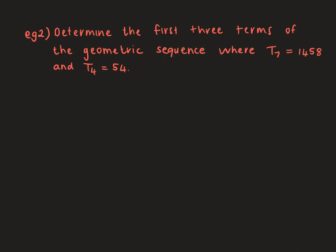Important information: this is geometric, not arithmetic like the previous example. We can begin with the same setup: I don't know what term 1, 2, or 3 is. We do, however, know the value of term 4 is 54. Then we don't know term 5 or 6, but the question told us that the value of term 7 is 1458.